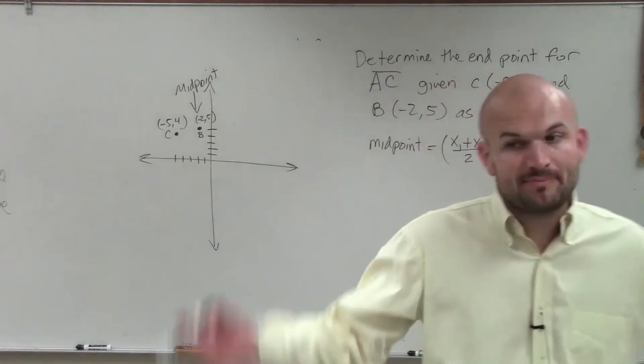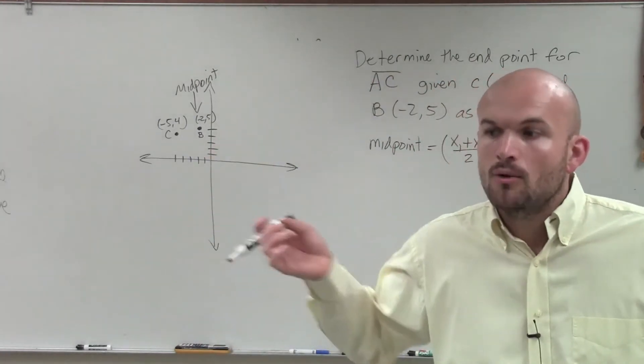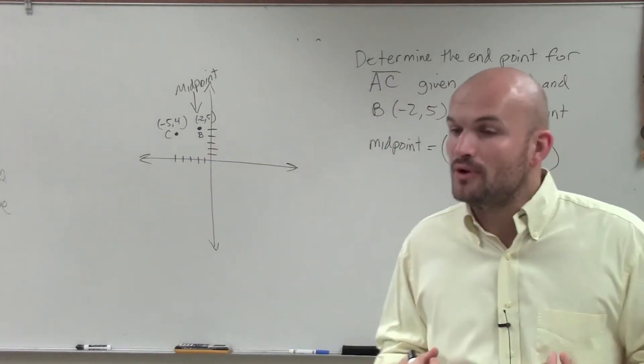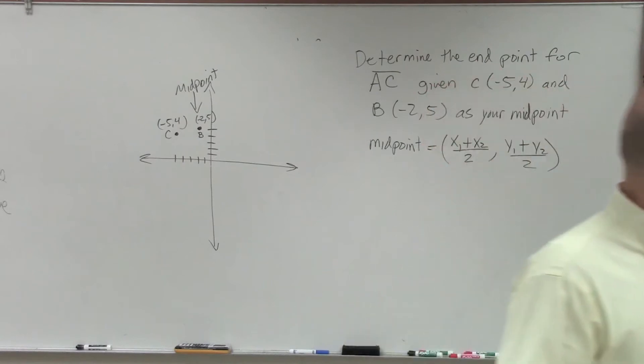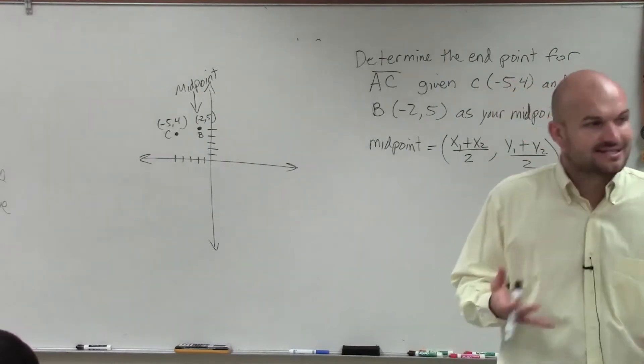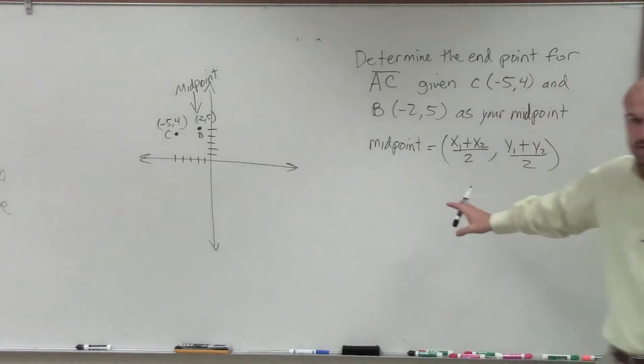That's the formula for the midpoint. If I want to find the midpoint between two points, what I'm simply going to do is add the two points up, and then divide by 2. Correct? Alright.